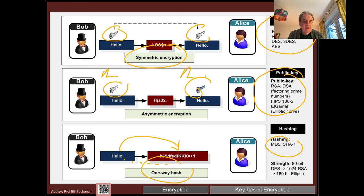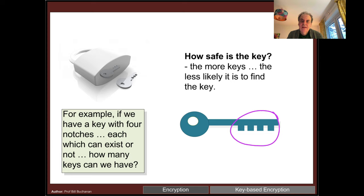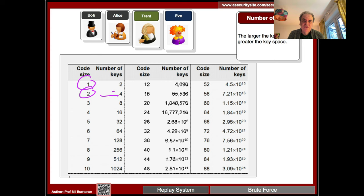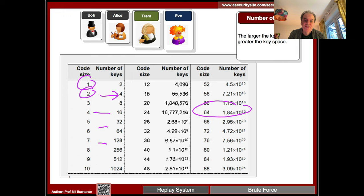We can also have a one-way hash where we can only go mathematically one way and cannot reverse it. MD5, SHA-1, SHA-2, and SHA-3 are typical hashing methods, though we can reverse them using tools like Hashcat. As for key safety: with 4 bits there are 16 possible keys; for 64 bits we get a very large number of keys. In the next unit we'll look at encryption keys and symmetric key encryption in detail.